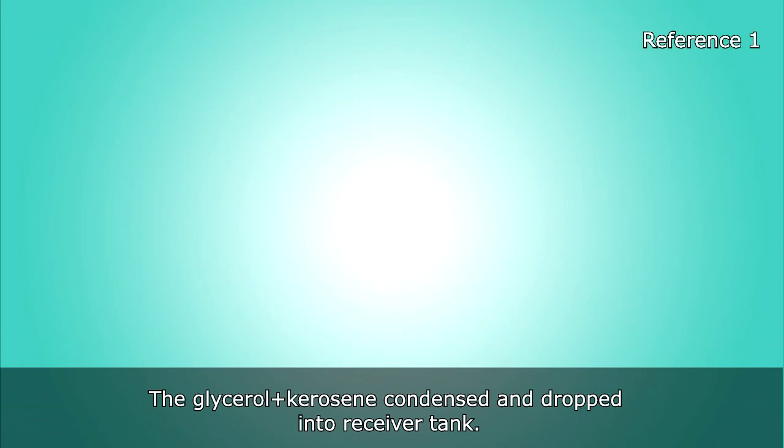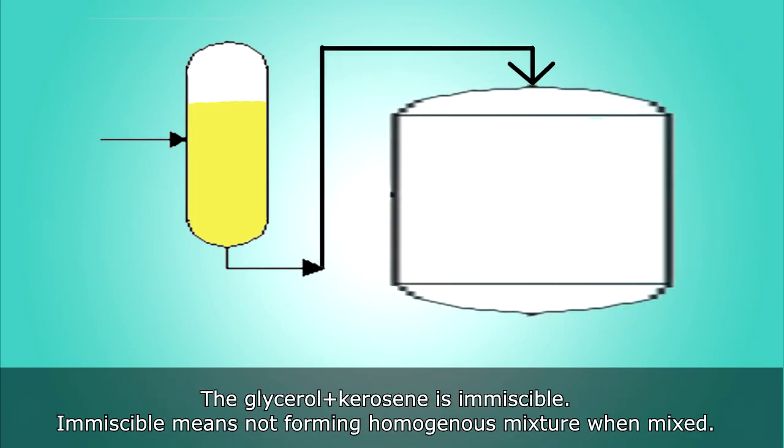The glycerol and kerosene condense and drop into the receiver tank. The glycerol and kerosene are immiscible. Immiscible means not forming a homogenous mixture when mixed.